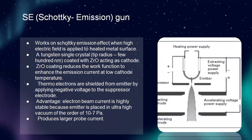The third type is the Schottky emission gun, which works on the Schottky emission effect when a high electric field is applied to a heated metal surface. A tungsten single crystal tip of radius a few hundred nanometers coated with ZrO acts as cathode. The ZrO coating reduces the work function to enhance emission current at low cathode temperature. Thermoelectrons are shielded from the emitter by applying negative voltage to the suppressor electrode. Advantage: the electron beam current is highly stable because the emitter is placed in ultra-high vacuum of the order of 10⁻⁷ Pascal, producing a larger probe current.